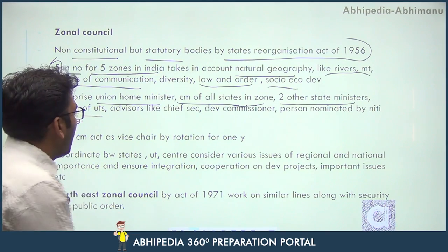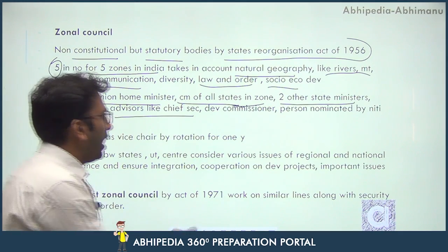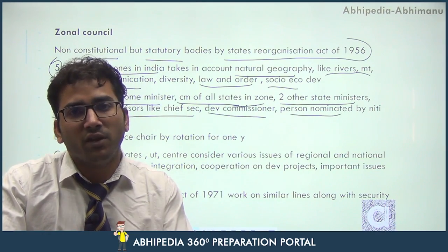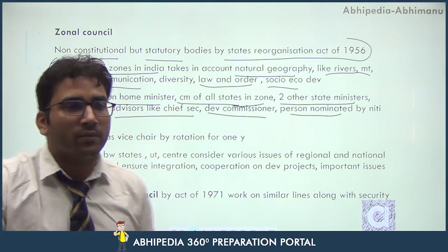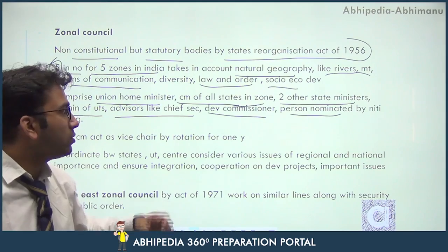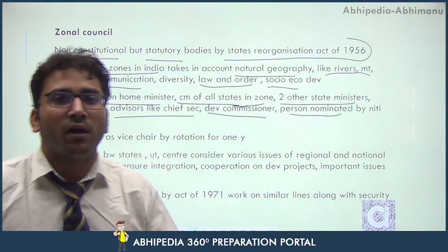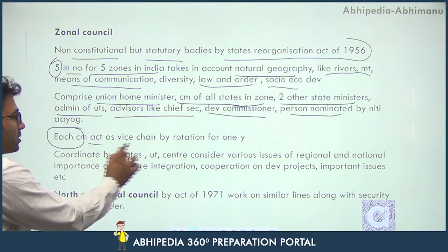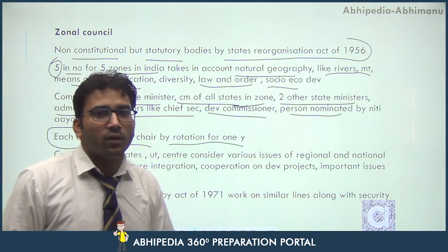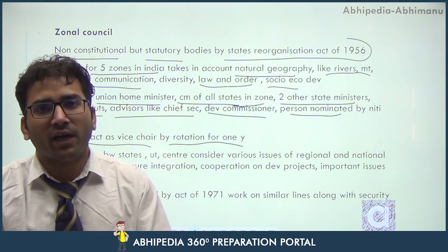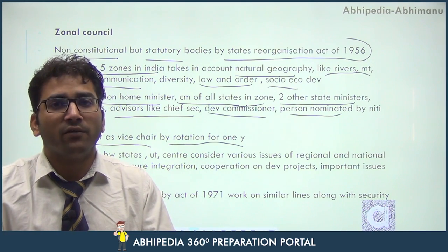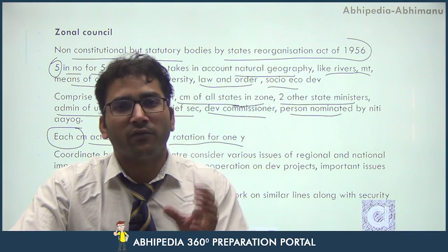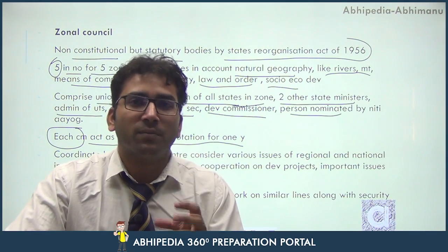Advisers include the Chief Secretary, the Development Commissioner — who is also an IAS officer — and a person nominated by the NITI Aayog, who is a research and development person. Each Chief Minister acts as vice chairman by rotation for one year. So while the Union Home Minister is always the chairman, one CM from the respective Zonal Council serves as vice chairperson each year on a rotational basis.